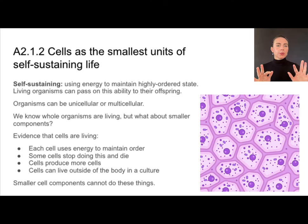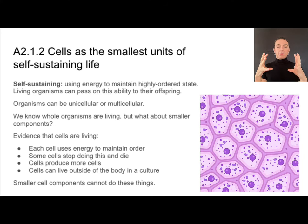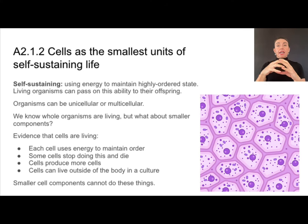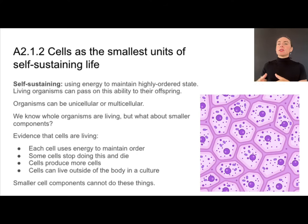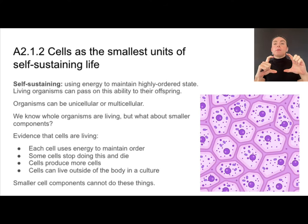Organisms can either be unicellular or multicellular. We know whole organisms are living, but how do we know, especially in multicellular organisms, about their smaller components? We have some evidence to suggest that cells are the smallest unit of life. First of all, they're using energy to maintain order and compartmentalization. When cells stop doing this, they tend to die. New cells can produce more cells — great evidence that something is living. Cells can actually live outside of the body: you can take some cells outside of tissue, put them into culture, and as long as they have all the nutrients they need, they will continue to live. We cannot do that with smaller cell components — I cannot take organelles outside of a cell, put them in a Petri dish, and expect them to live. That is how we arrive at the cell being the basic component of a living thing.